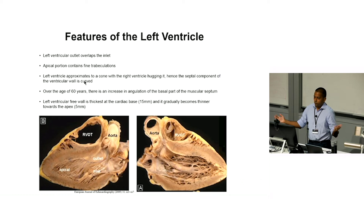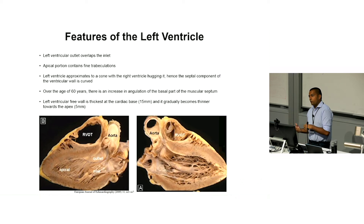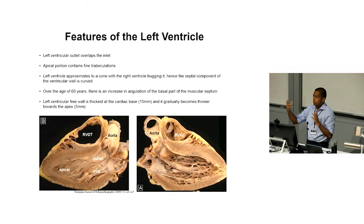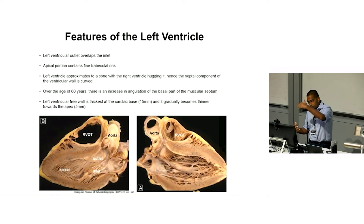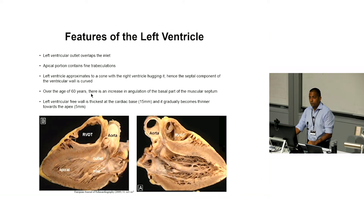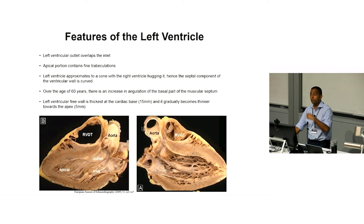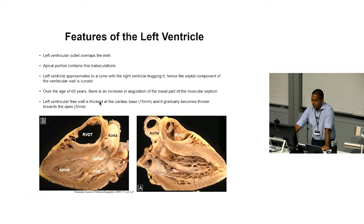The left ventricle approximates a cone, which is why we can apply Simpson's rule to get volumes on echo. The right ventricle hugs the left ventricle, which is why it's quite difficult on echo to get good measurements and volumes — the anatomy is just different. Because the RV hugs the LV, you get a curved septal component of the left ventricle. We're used to seeing that curved part of the LV septum, and in people over 60–80 years old, the angulation at the base can increase — sometimes we note an S-shaped septum on an echo report, and you can get some flow acceleration through it.